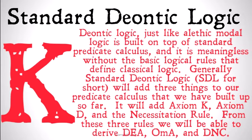Deontic logic, just like alethic modal logic, is built on top of standard predicate calculus. And it's going to be meaningless without the basic logical rules that define classical logic. So you need to accept all of those other axioms as well as standard deontic logic axioms to build up deontic logic.